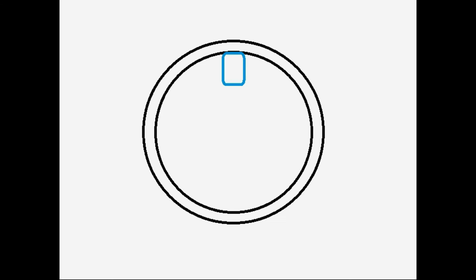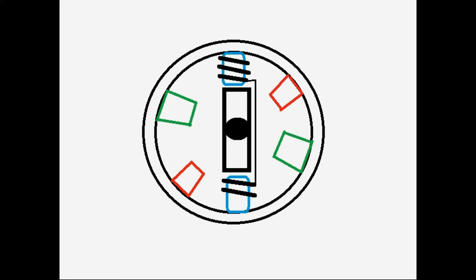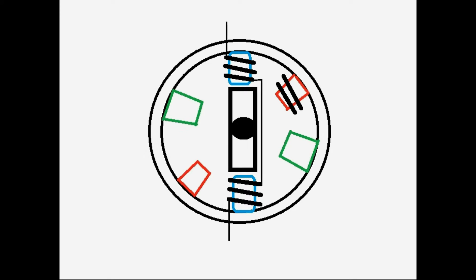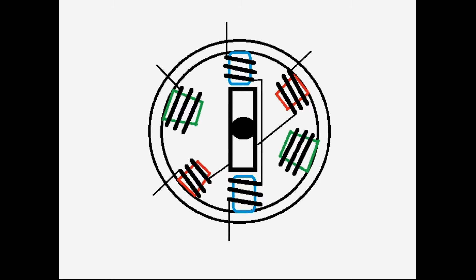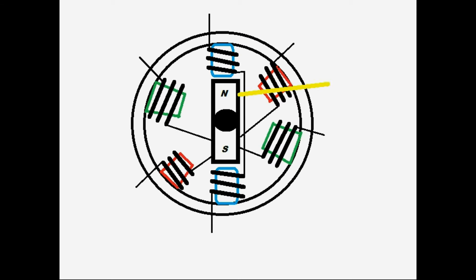The motor consists of a stator and rotor. A BLDC motor is a motor with no brushes and the rotor is a permanent magnet. There is a Hall effect sensor which detects the position of the rotor shaft. No direct contact between stator and rotor means less friction, less noise, less power loss, and high speed.